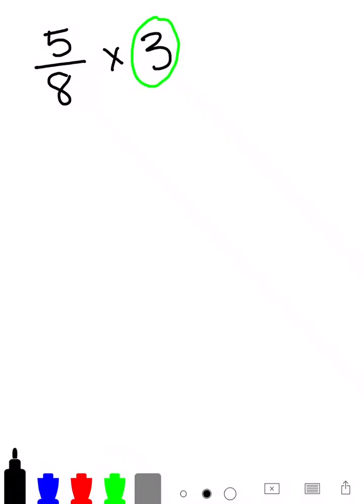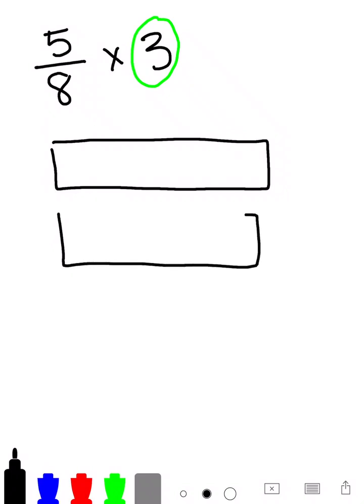And I always use candy bars, loaf of bread, something like that just to help them be able to think through the problem. So I'll say, okay, we're going to draw 3 whole candy bars, because we have 3 holes. I'm going to draw them kind of longer, like a rectangle. We have 3 whole candy bars, okay?